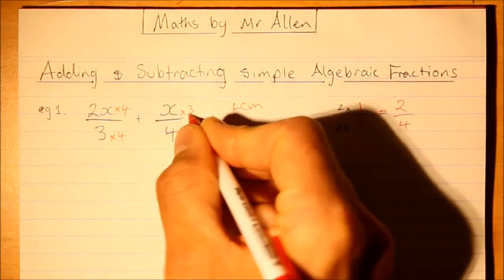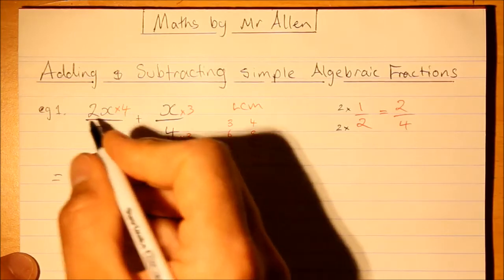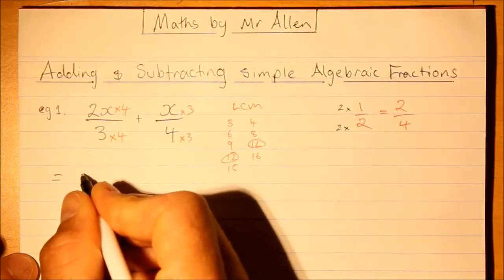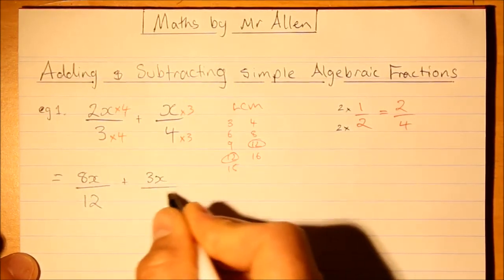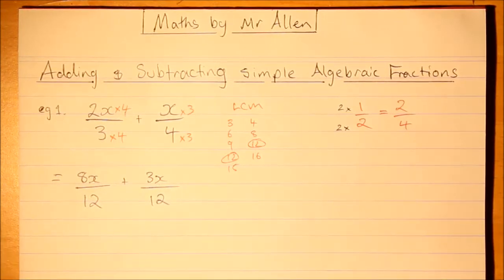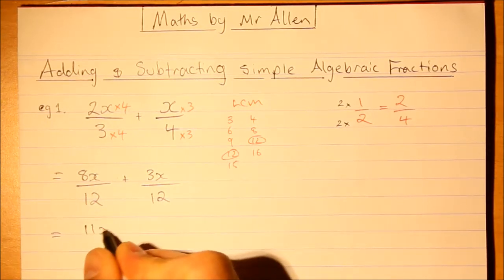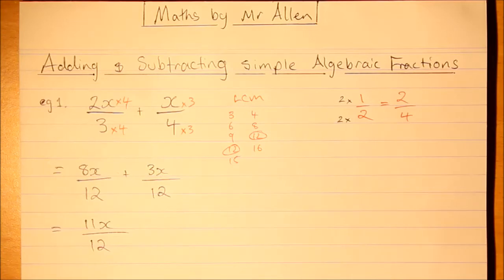This is going to give us our new equivalent fractions. So 2x times 4, you multiply the coefficient, the numbers there, so that's 8x over 12 plus 3x over 12. Because the denominators are the same, we can add these fractions together. So 8 and 3 is 11x over 12, and we have just added some algebraic fractions. That's our answer there.